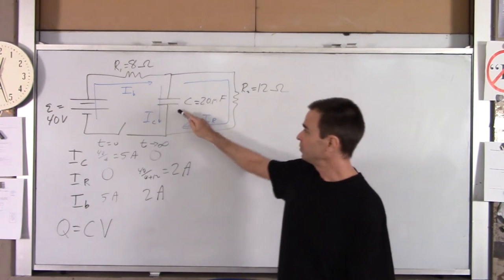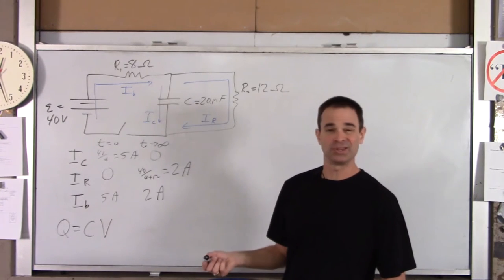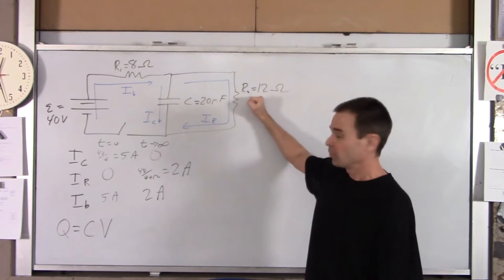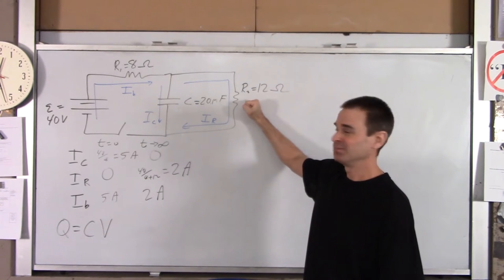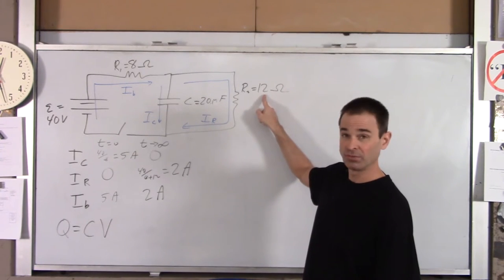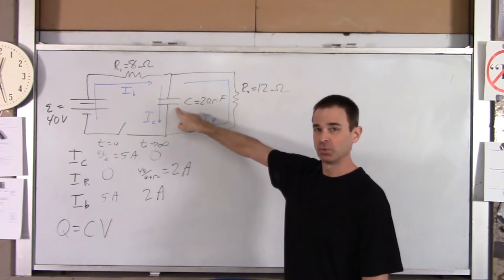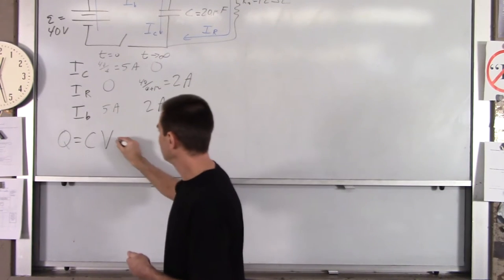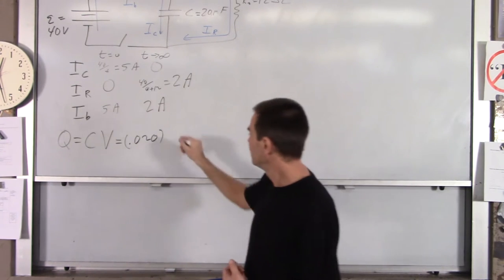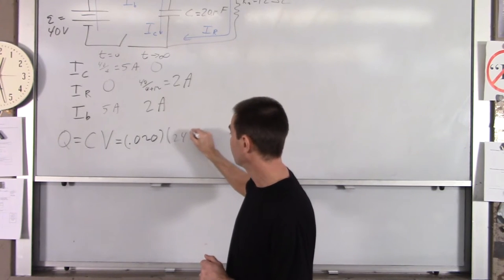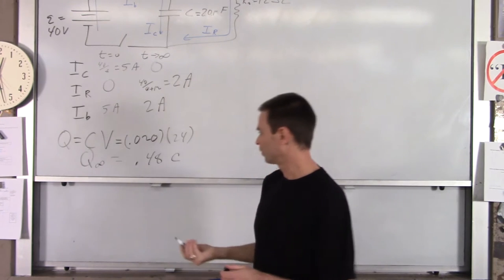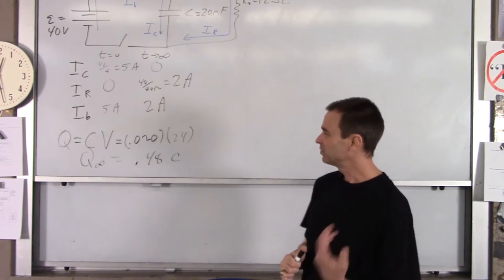The capacitor and this resistor are in parallel, so they always have the same voltage. After a long long time, the current through the 12-ohm resistor is 2 amps, so V = IR = 2 × 12 = 24 volts. This voltage maxes out at 24 volts. So the charge is Q = 0.020 F × 24 V = 0.48 coulombs, or 480 millicoulombs. That's the charge after a long long time.